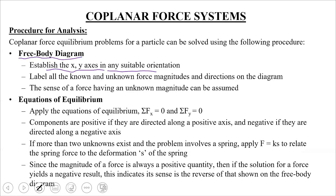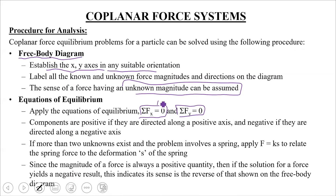The sense of a force having an unknown magnitude can be assumed. When applying the equations of equilibrium — summation Fx equals zero and summation Fy equals zero — components are positive if directed along the positive axis and negative if directed along the negative axis. Now, since you have two equations, you can solve for at most two unknowns. If more than two unknowns exist, you should look for a spring force to eliminate an unknown.